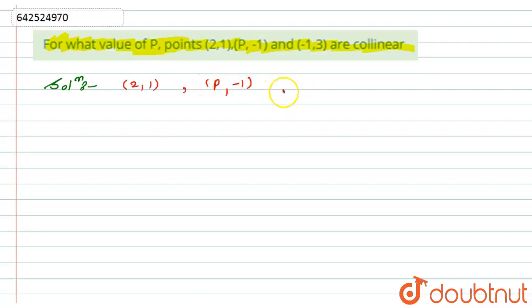And the third point is given to us (-1,3). Now if these points will be collinear, so it is nothing but that is the triangle ABC, means area of the triangle ABC will be nothing but equal to zero.